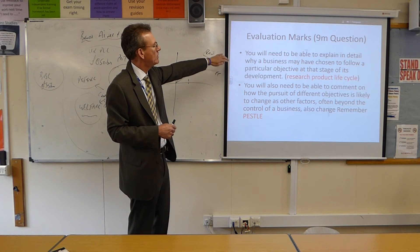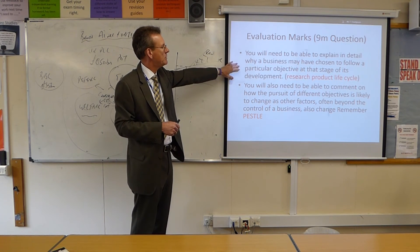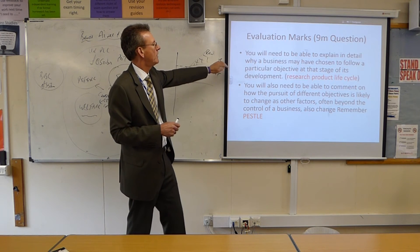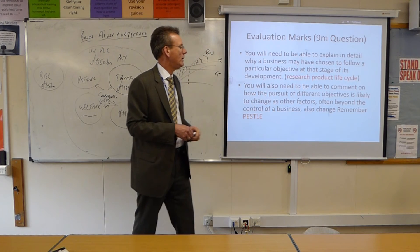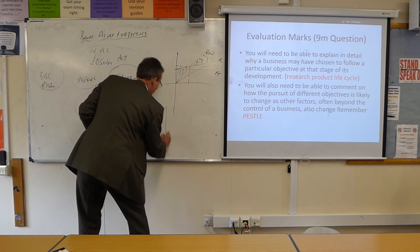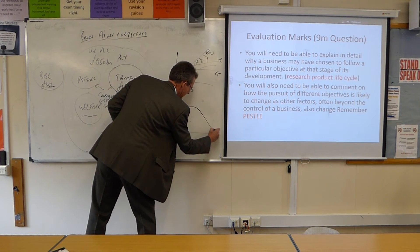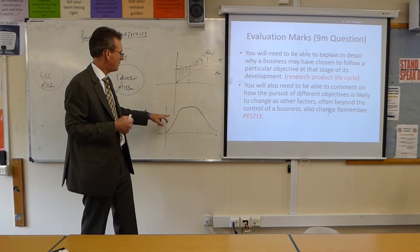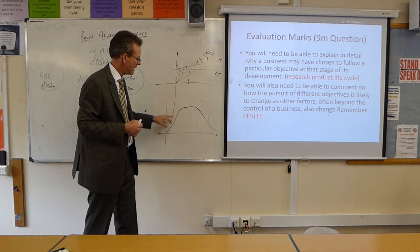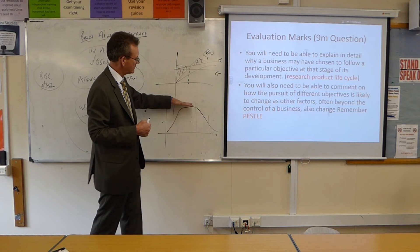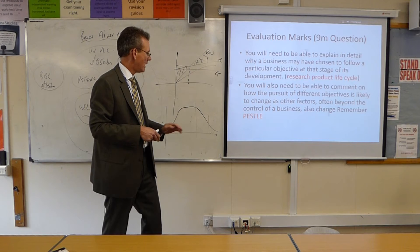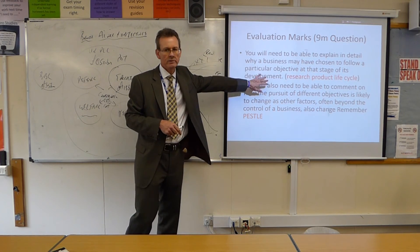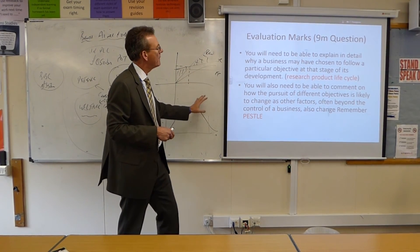My top tips on nine-mark questions on this topic: to get the nine marks on an aims and objectives question, you need to explain in detail why a business has chosen to follow a particular objective at that stage in its development. If we look at the product life cycle, there's a curve with different stages, and for nine-mark questions you might want to comment on how certain objectives relate to the launch stage, growth stage, maturation stage, and decline stage — different objectives kick in at different stages.